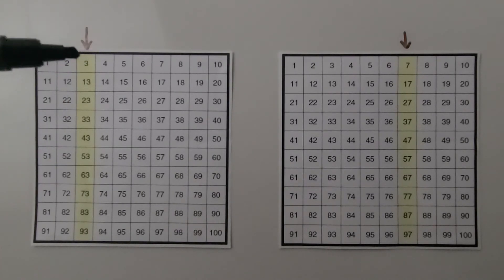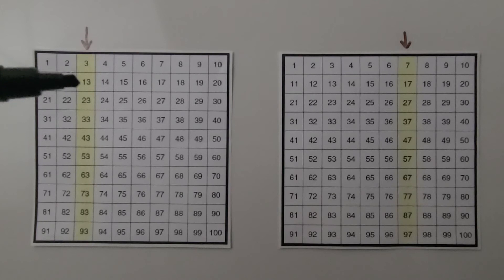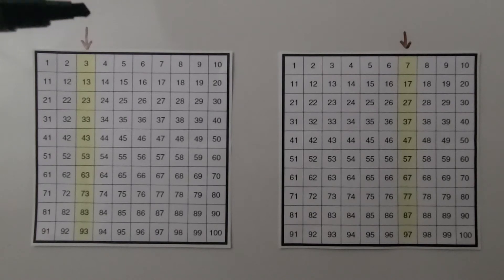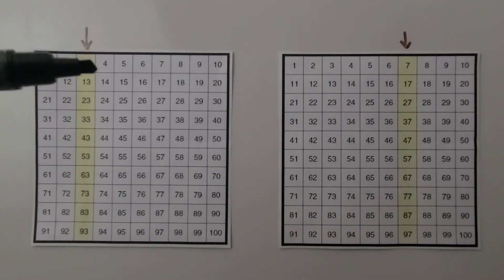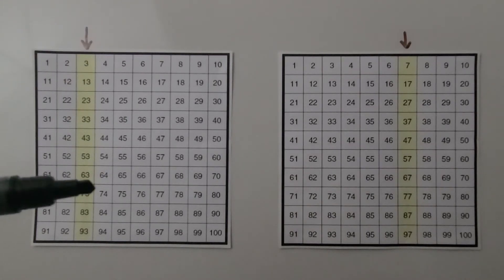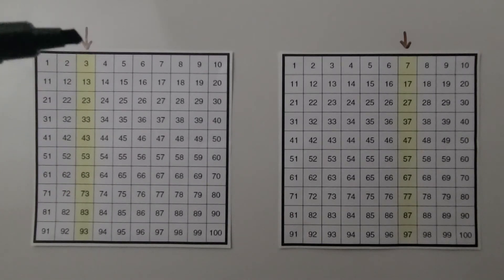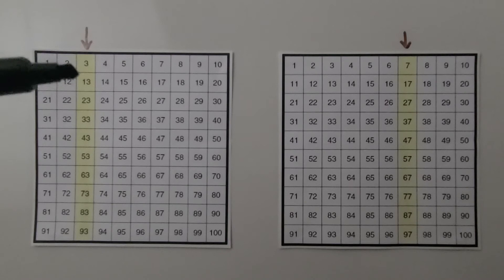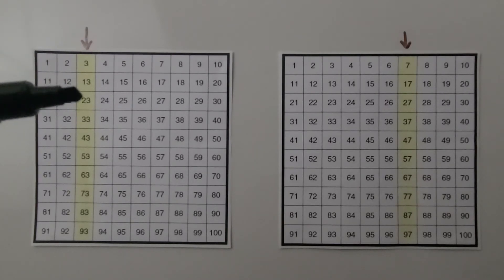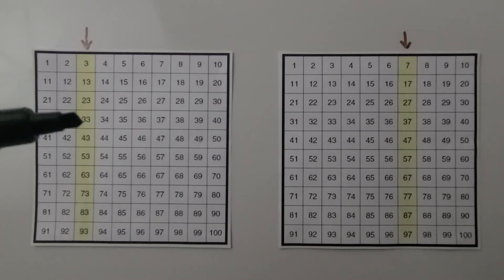If we start with 3, 10 more would be 13, and 10 more than 13 would be 23. Going down this column, each number will end with a 3 and be 10 more than the number above it. We can see that 10 more than 3 is 13, 10 more than 13 is 23, and 10 more is 33.